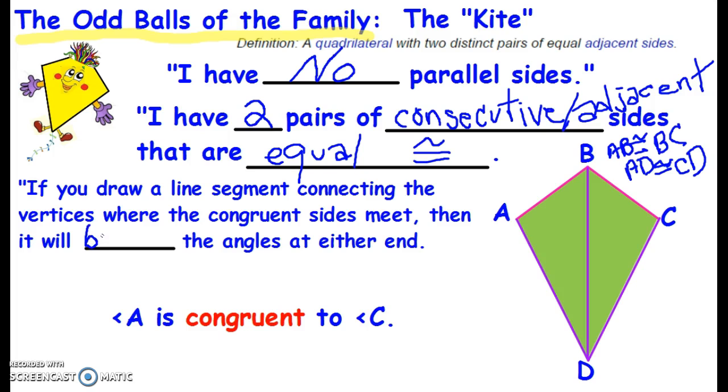So it bisects the angles at either end. Don't remember what the word bisect means? Okay, bisect means that this angle and this angle are congruent. So angle ABD is congruent to CBD. It also means that ADB is congruent to CDB. So those two angles are congruent.